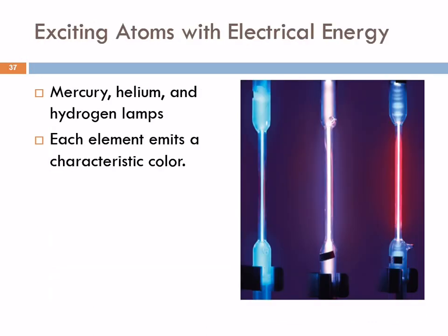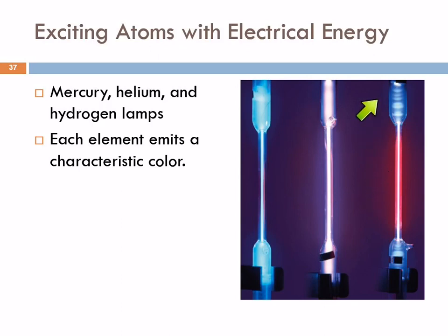Here are examples of mercury, helium, and hydrogen lamps — the same idea as a neon light. You have a gas — mercury gas, helium gas, hydrogen gas — and you pass electrical current through it. You're putting energy into the individual atoms, causing the gas to glow. The color you see is a combination of the different wavelengths of light emitted by those elements.